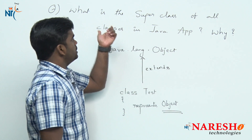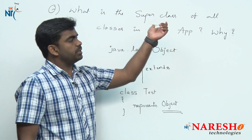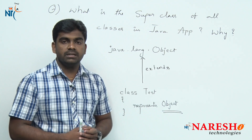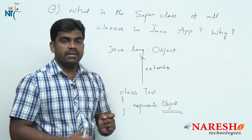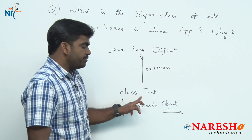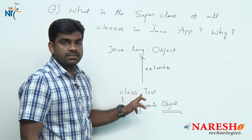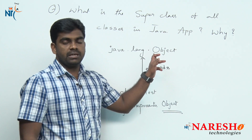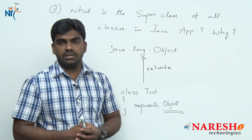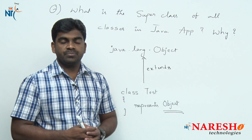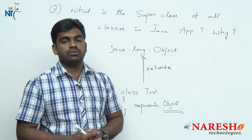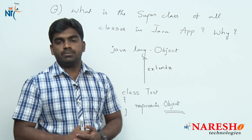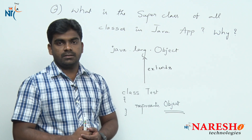So, the superclass of all classes in a Java application is Object, and every object silently gets the behavior of the Object class. Hope you understood. For more videos, please subscribe to the Nourish IT channel. Thank you.